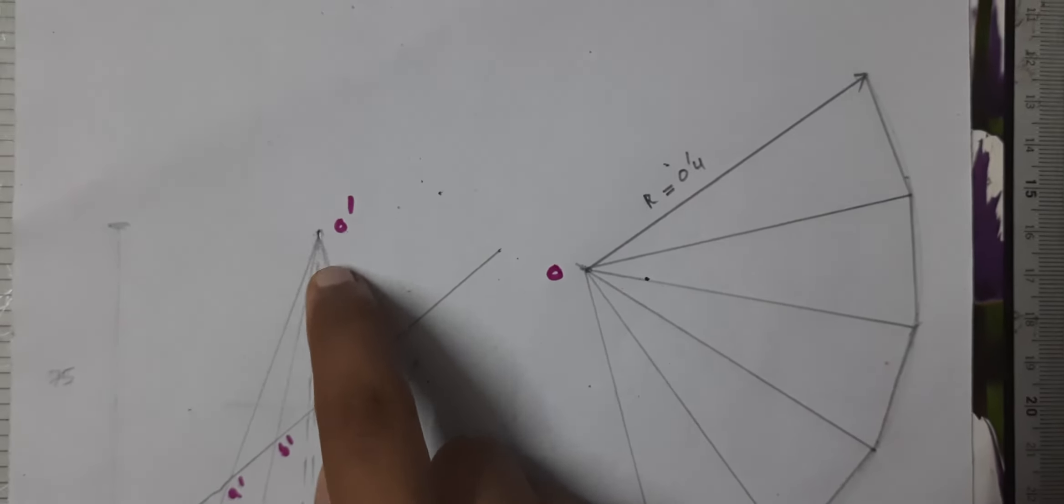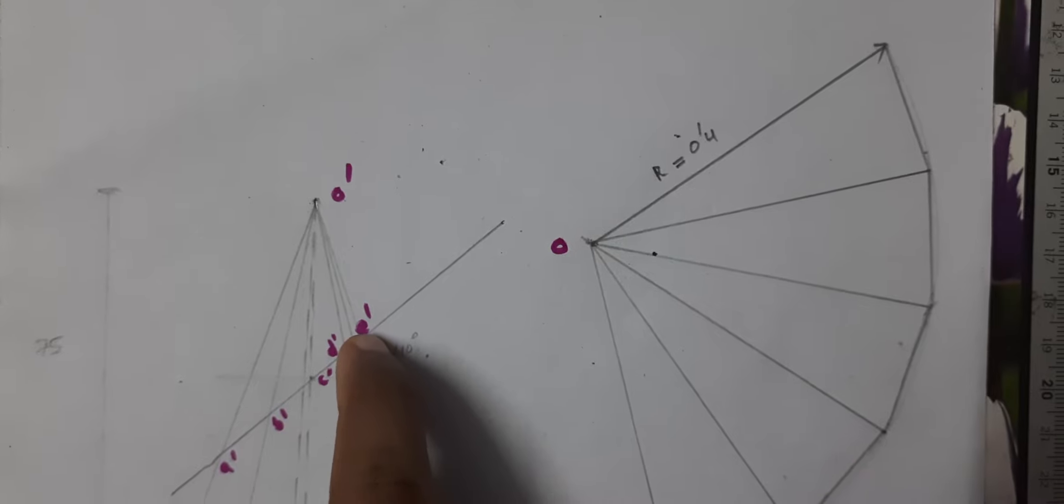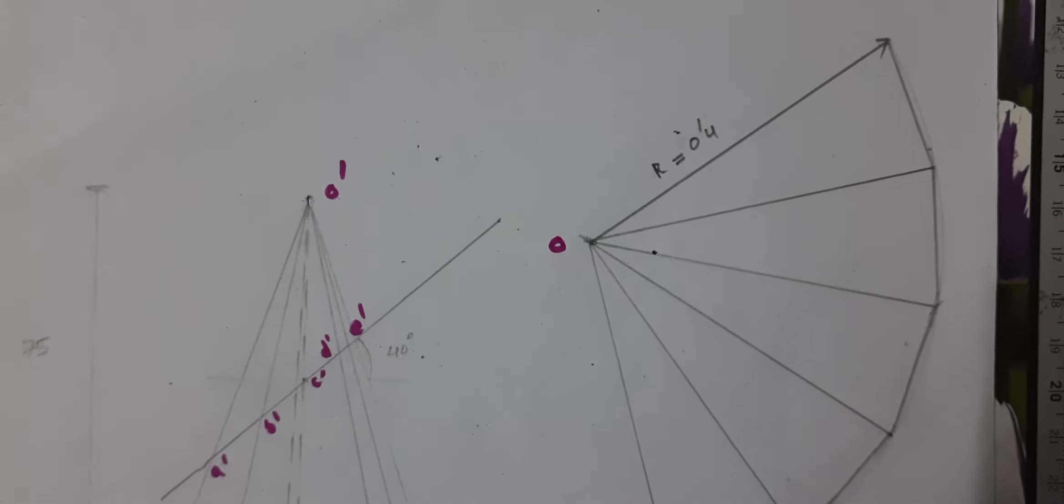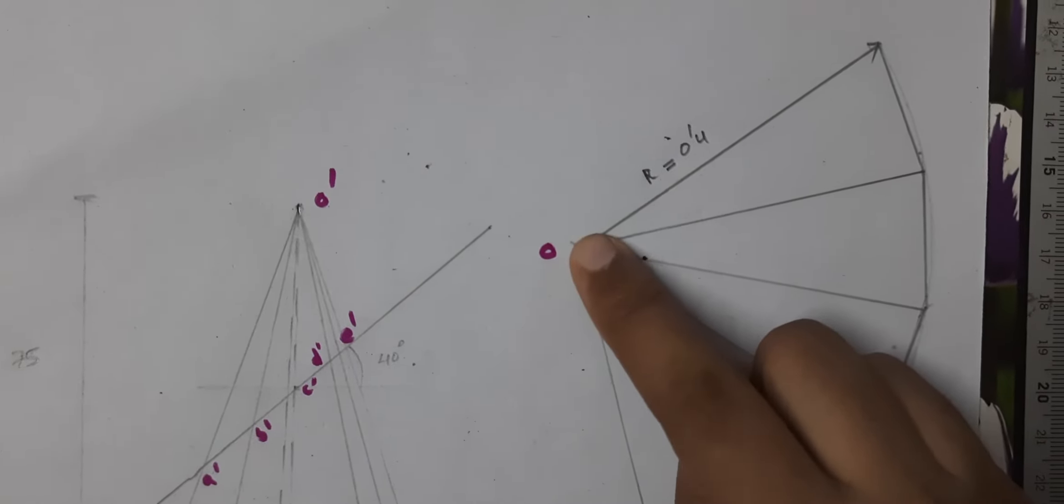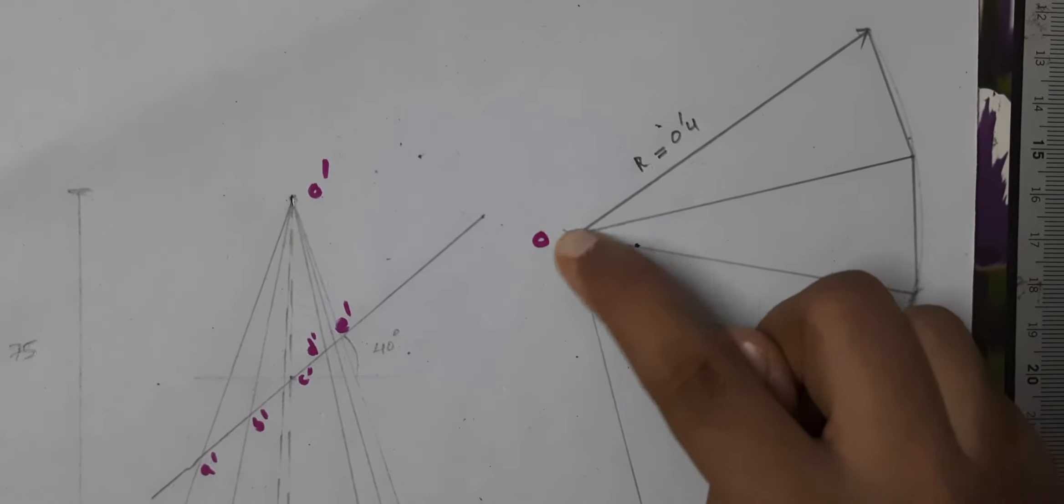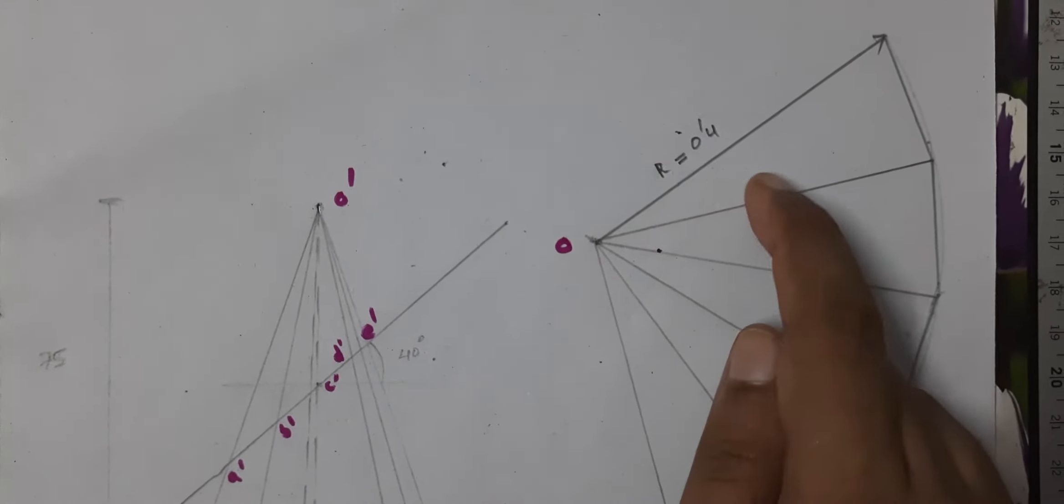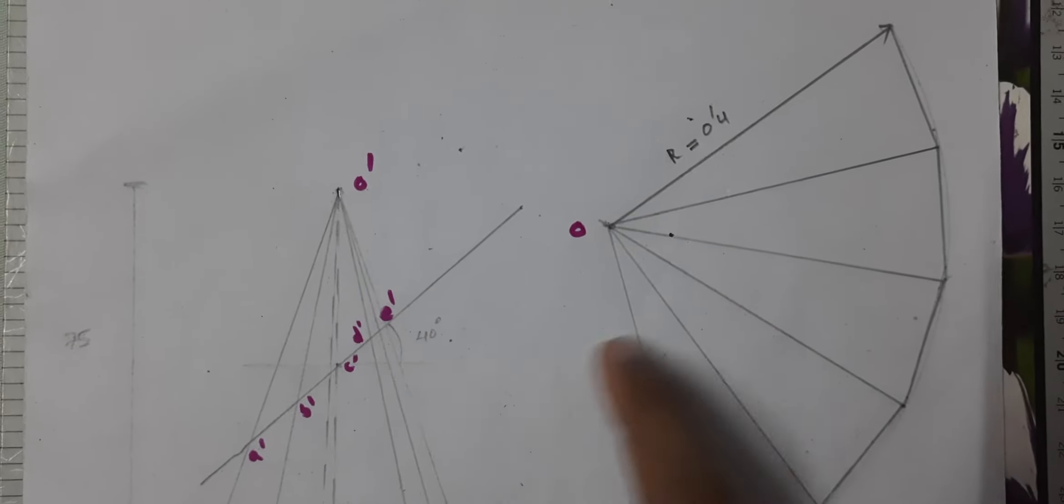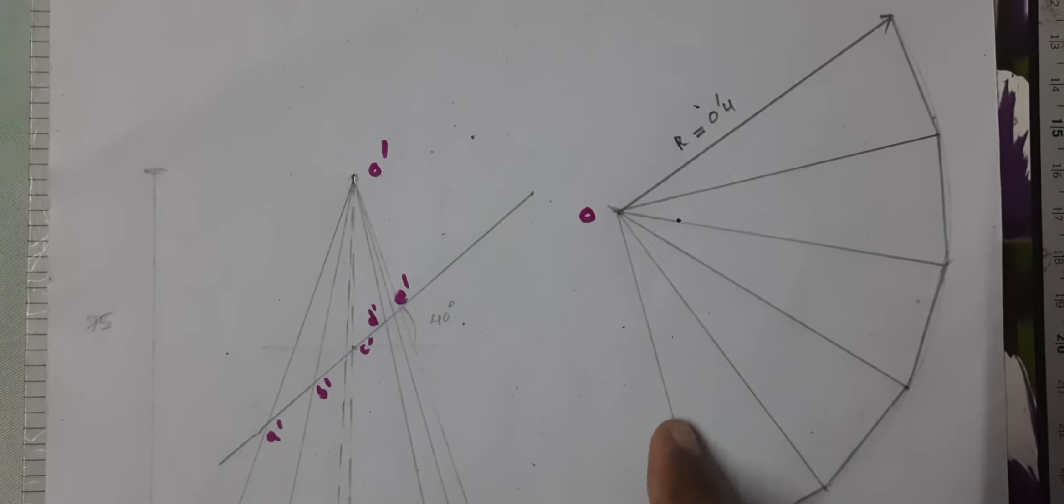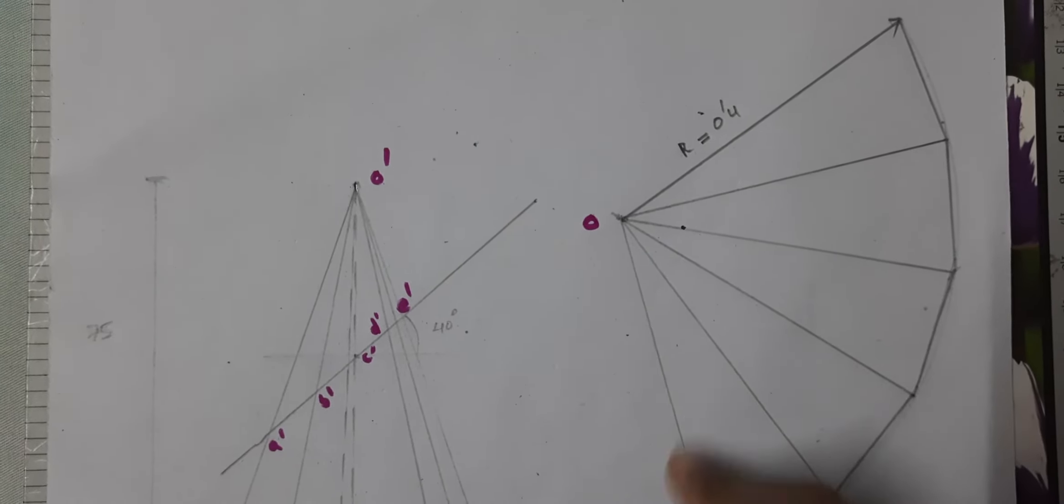In this one position, we will measure the distance between the one point. Then we will mark the length of the one point.